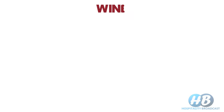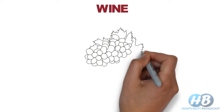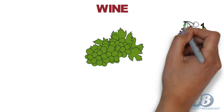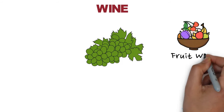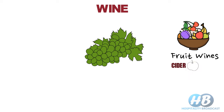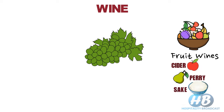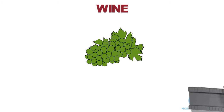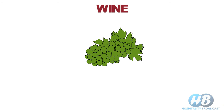In the European Union, the term wine refers to an alcoholic beverage made from grapes only. The wines made from other fruits are called fruit wines. Some of them are also named after the fruit they are obtained from. In this video, we will focus on the making of wine by fermenting grapes.